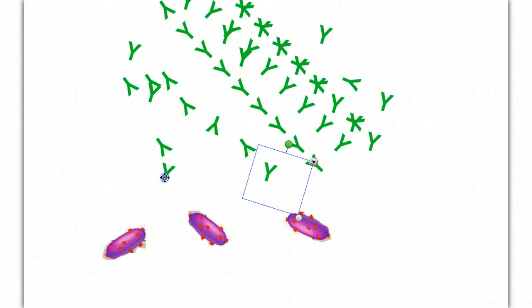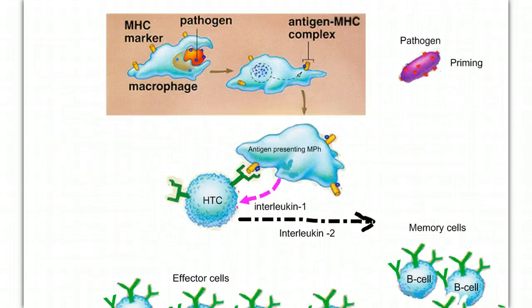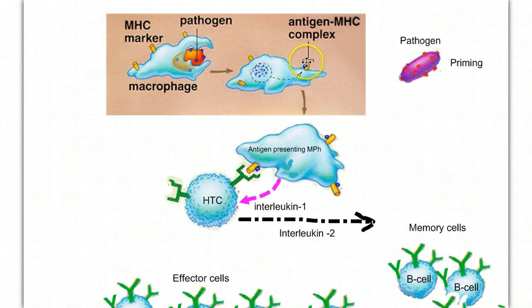These antibodies circulate in the blood and bind to the specific antigens on the pathogen they're designed to bind to. This accomplishes two things: with all these antibodies bound to the pathogen, it's difficult for the pathogen to go and affect other body cells. Also, the bound antibodies mark the pathogens for destruction by macrophages. The final deed is done by the macrophage that comes in and engulfs the pathogen.